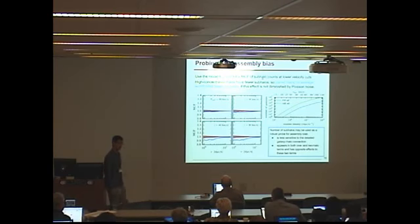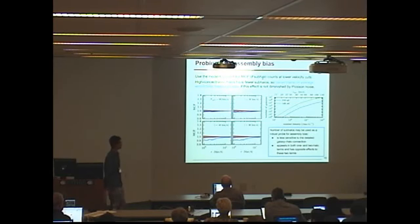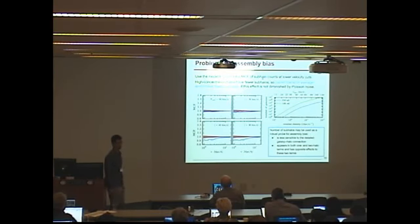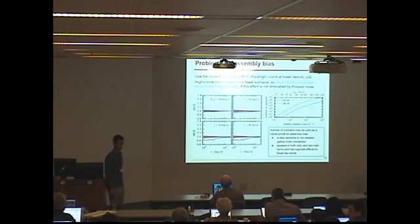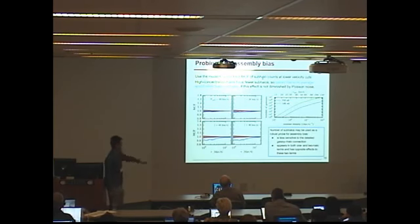A follow-up question asks about the strong mass dependence — why you see nothing at subhalos above 60 km/s. The speaker explains: when you select subhalos above 60 km/s, you are dominated by Poisson error. Going to smaller velocities reduces the relative Poisson scatter, which is why the signal becomes detectable.